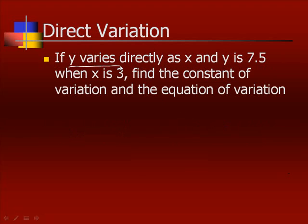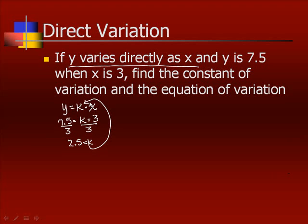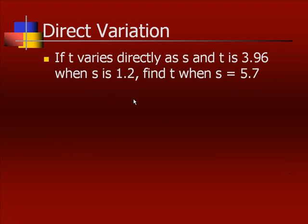For instance, if we know that y varies directly as x, y came first, so it goes first. Varies directly means we're going to do times k, and it varies directly as x, so we're going to multiply by x. Now, we're going to plug in. If y is 7.5 when x is 3, divide both sides by 3, so we get k is 2.5. Now, k will stay 2.5 in this problem. So that is our constant of variation. The equation of variation means y equals 2.5 times x, because we take that k and plug it back in. This is our equation of variation.